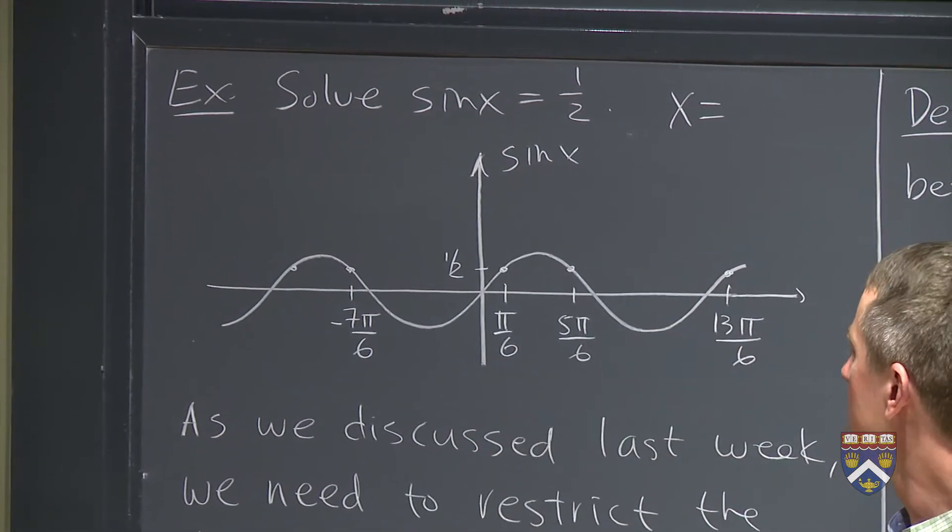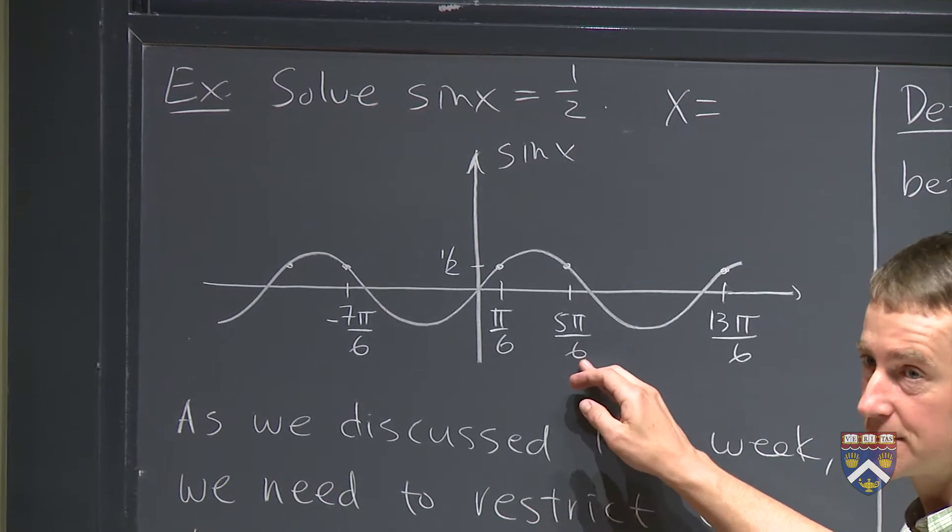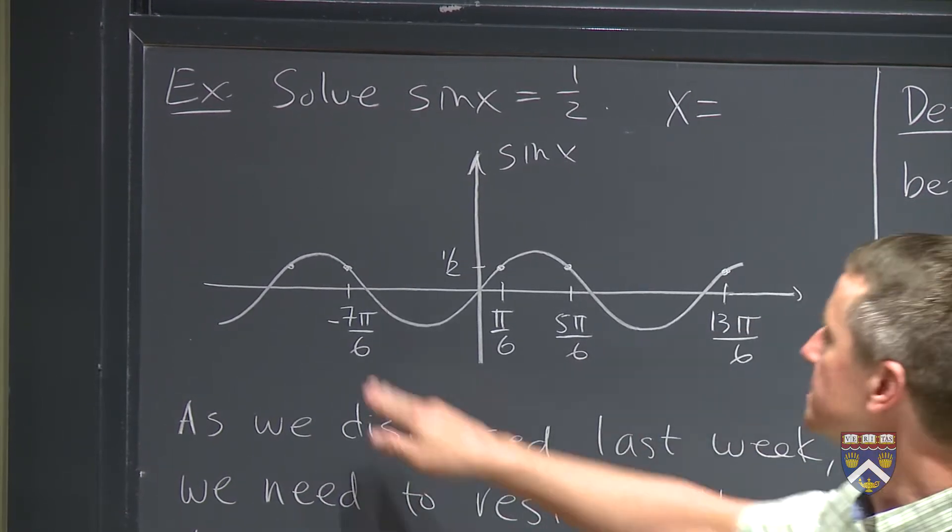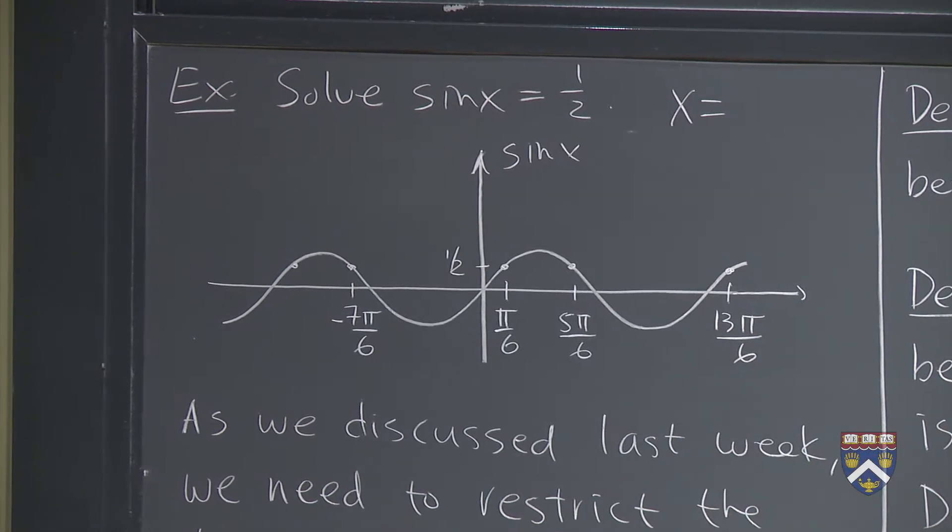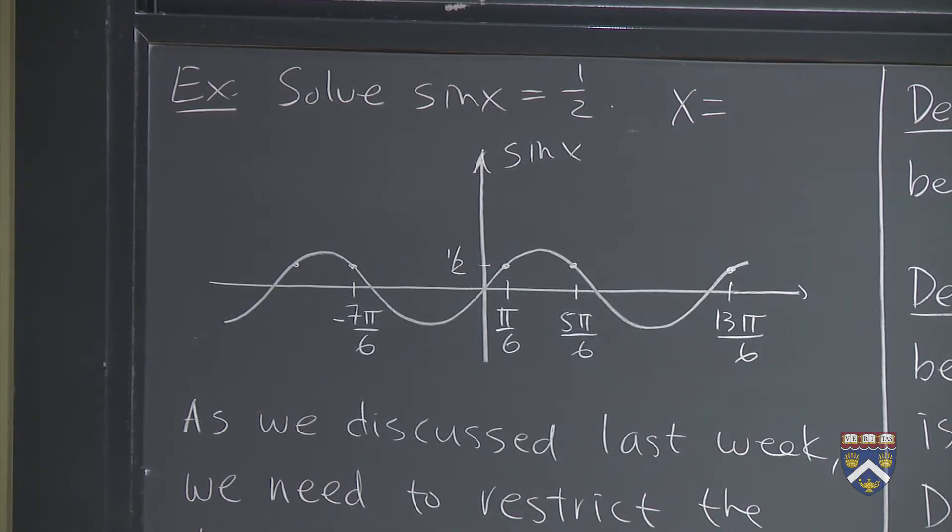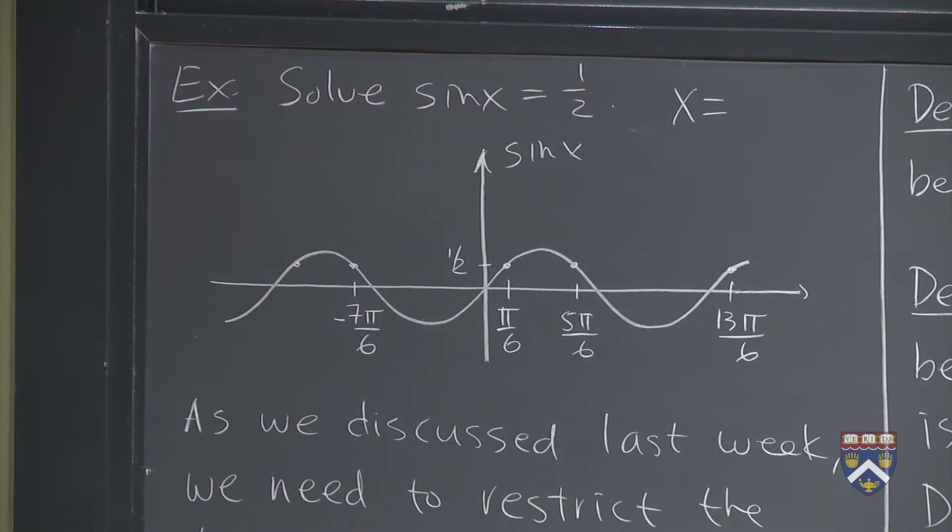So you might say the answer is pi over 6. You'd be right. Your friend might say the answer is 5 pi over 6. Your friend would be right. Somebody else might say negative 7 pi over 6, 13 pi over 6. How many different possible answers are there? There are infinitely many answers.